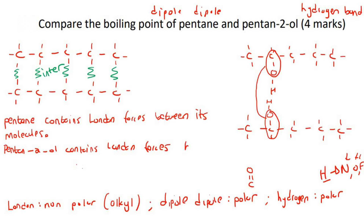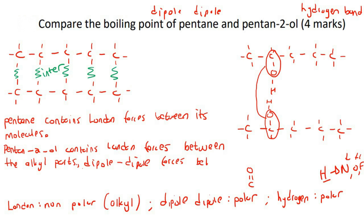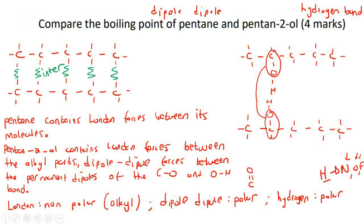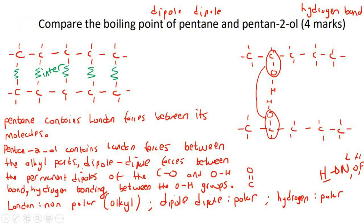Pentan-2-ol contains London forces between the alkyl parts, dipole-dipole forces between the permanent dipoles - the carbon-oxygen and oxygen-hydrogen bonds - and it also contains hydrogen bonding between the OH groups, which some teachers will call the hydroxyl groups. So alcohols actually have all three: London forces, dipole-dipole, and hydrogen bonding.